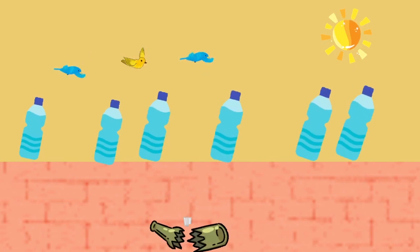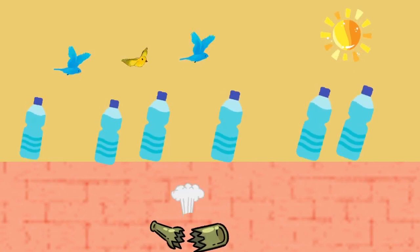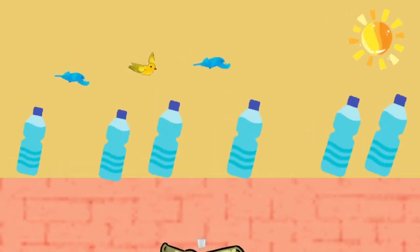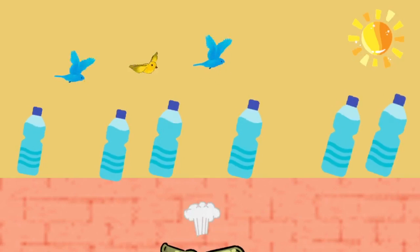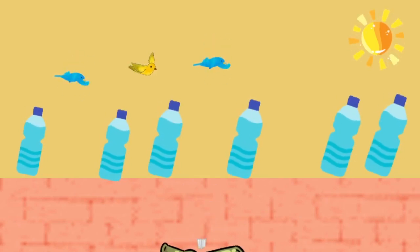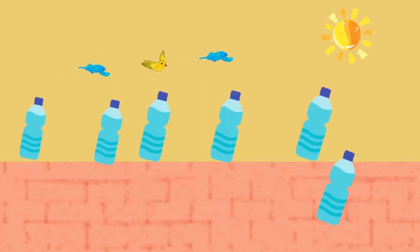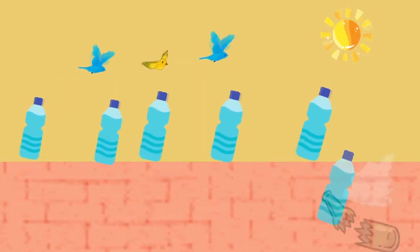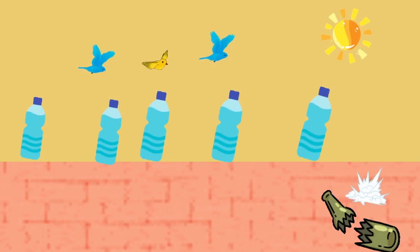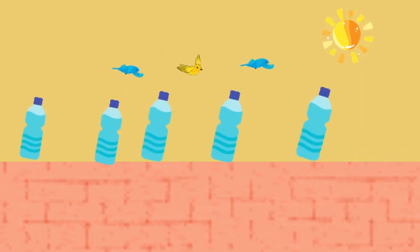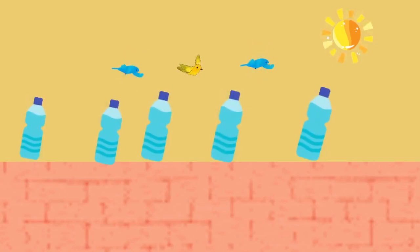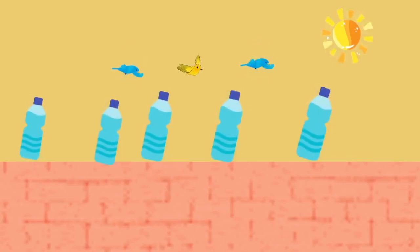And if one green bottle should accidentally fall, there'll be six green bottles sitting on the wall. Six green bottles sitting on the wall, and if one green bottle should accidentally fall, there'll be five green bottles sitting on the wall.